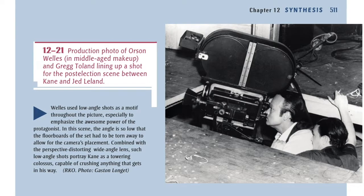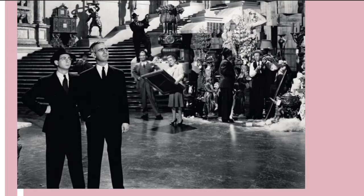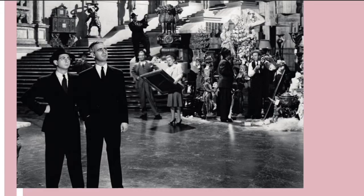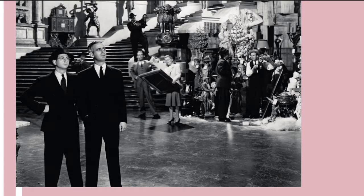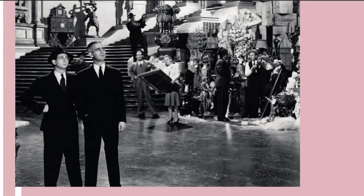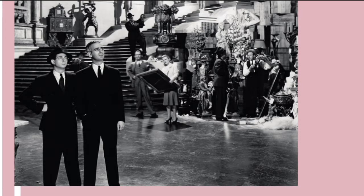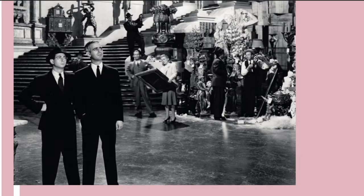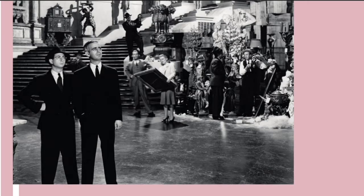12-22: Citizen Kane with William Alland and Paul Stewart. Near the end of the movie, Thompson admits defeat. He never does find out what Rosebud means, and he describes his investigation as playing with a jigsaw puzzle, while the camera cranes back and up, further and further away, revealing thousands of crates of artwork, memorabilia, and personal effects — the fragmented artifacts of a person's life. 'I don't think any word can explain a man's life,' Thompson continues. 'No, I guess Rosebud is just a piece in a jigsaw puzzle — a missing piece.'